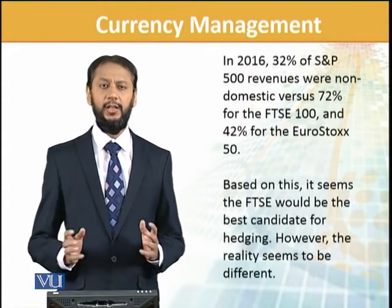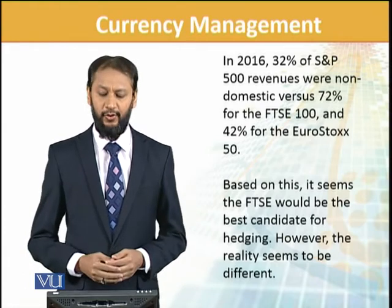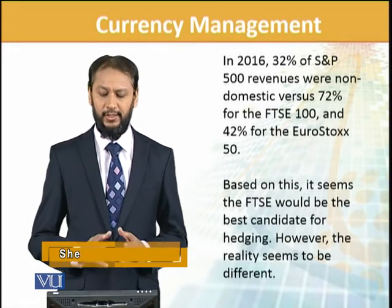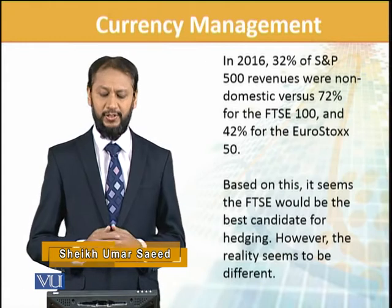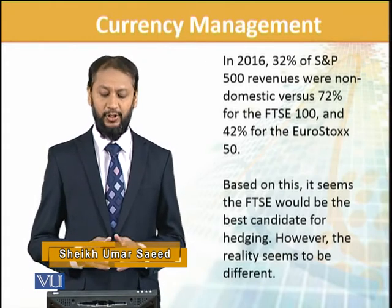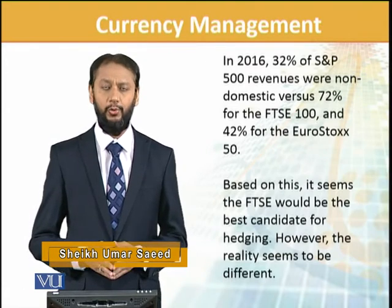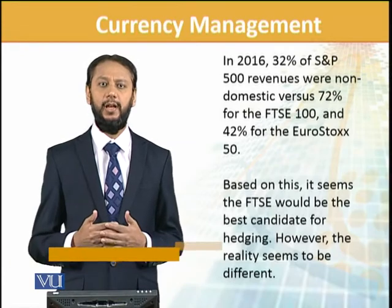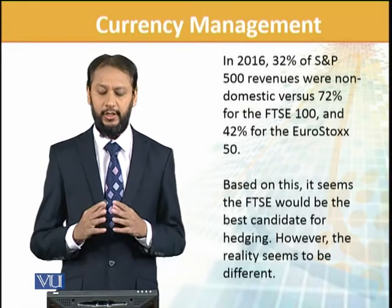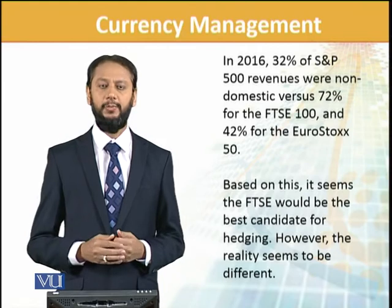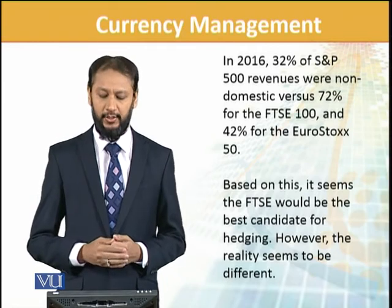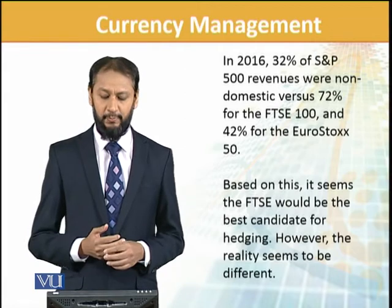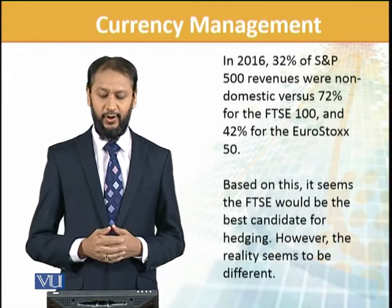In 2016, 32% of S&P 500 revenues were non-domestic, versus 72% of FTSE 100 and 42% of Euro. Here we basically talk about domestic levels and what are the movements of currency in that context. Looking at these numbers, it seems that FTSE would be the best candidate for hedging.